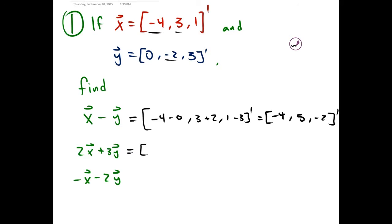Then we're trying to find 2x minus 3y. We take the first component of x, negative 4, multiply it by 2 to get negative 8. The first component of y is 0, so multiplying by 3 is still 0 — adding 0 does nothing. Then the second component of x times 2 gives 6, and the second component of y times 3 gives negative 6. The third component of x times 2 gives 2, and the third component of y times 3 gives 9. This gives us (-8, 0, 11).